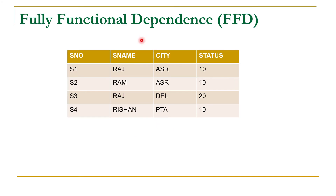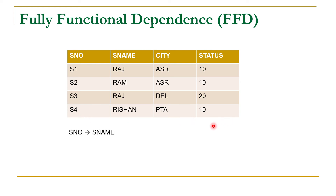To understand this concept further, let us consider relation S. Here we have four attributes: S number, S name, city, and status. S number is the primary key and it has unique values S1, S2, S3, and S4, while S name can repeat — we have Raj multiple times — cities can repeat and status can also repeat. We know that the primary key functionally determines all other non-key attributes, so S number will functionally determine supplier name.